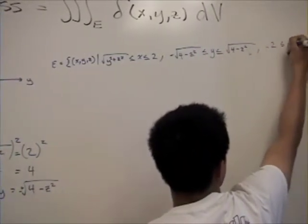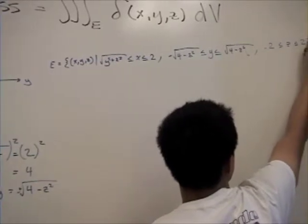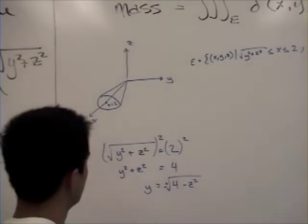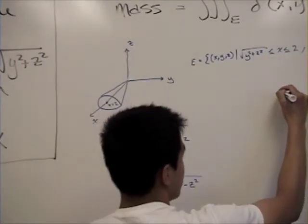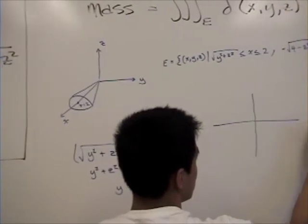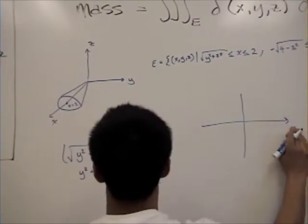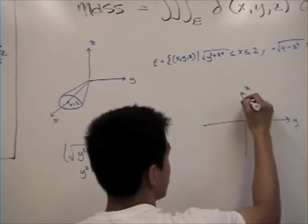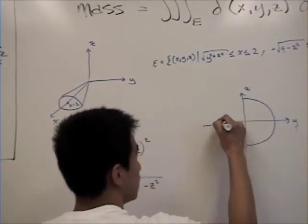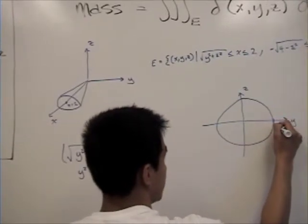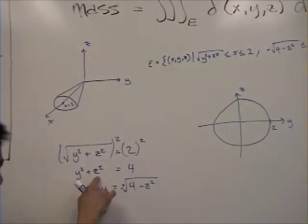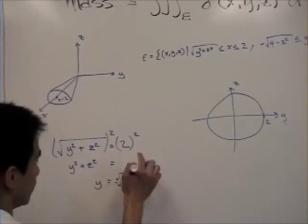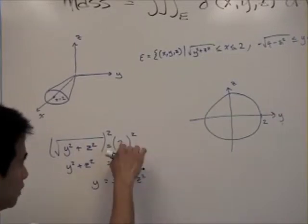The reason z goes from negative 2 to 2 is because if we look at the x equals 2 plane in terms of the z and y axes, it looks like a circle. Recall that y squared plus z squared equals 4 is the equation of a circle with radius 2, which we can write as 2 squared.